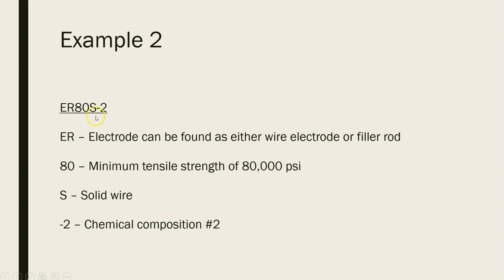Here's our second example: ER80S-2. The E and R tell us this wire can be used as a wire electrode or as a filler rod. The 80 tells us the minimum tensile strength is 80,000 pounds per square inch. The S tells us it's a solid wire. And dash 2 tells us this is chemical composition number 2 — if we really wanted to know the composition, we'd just go back to that chart and find dash 2.